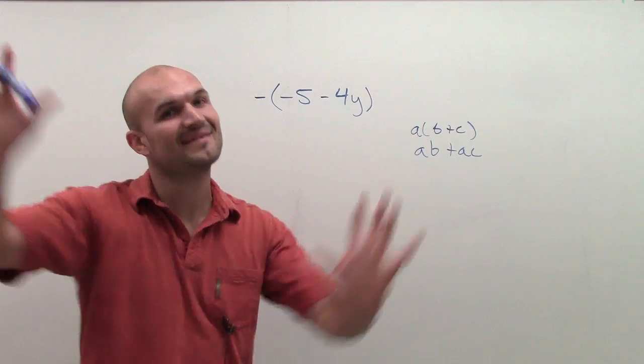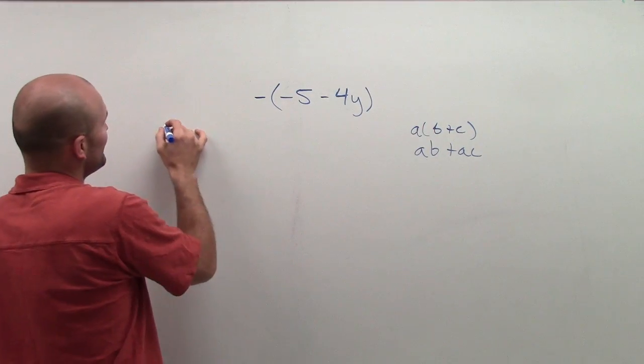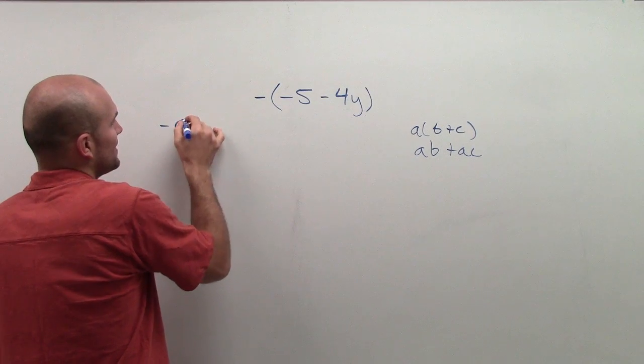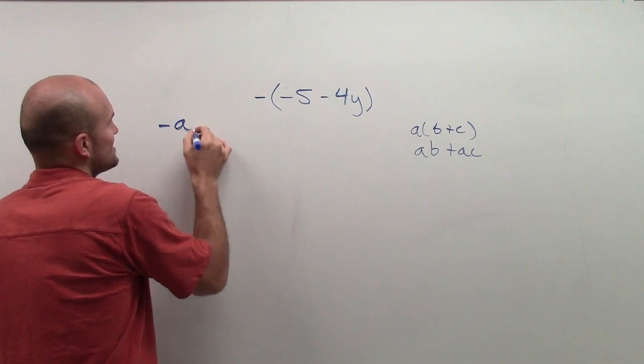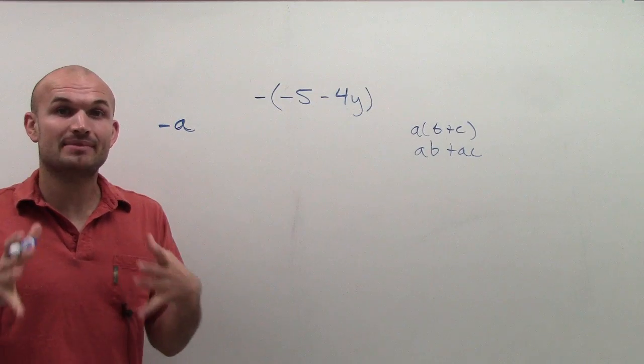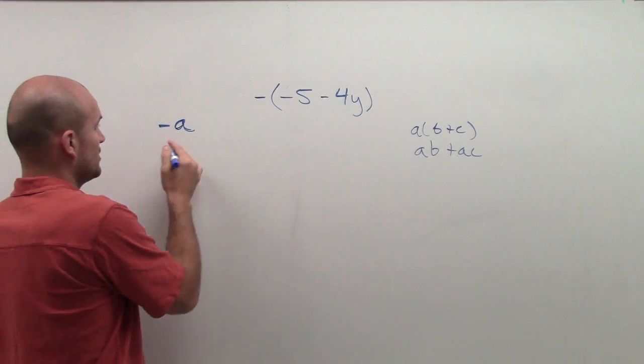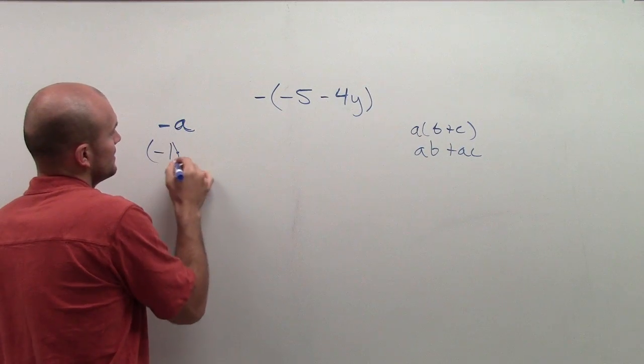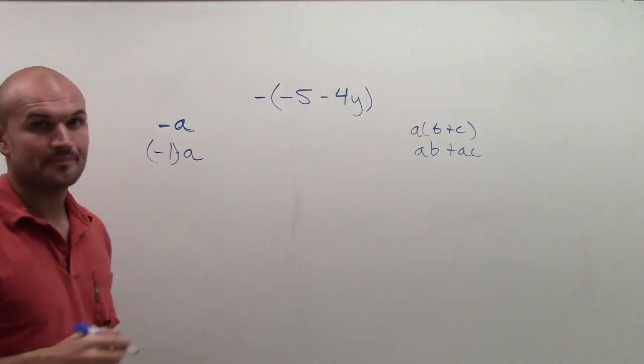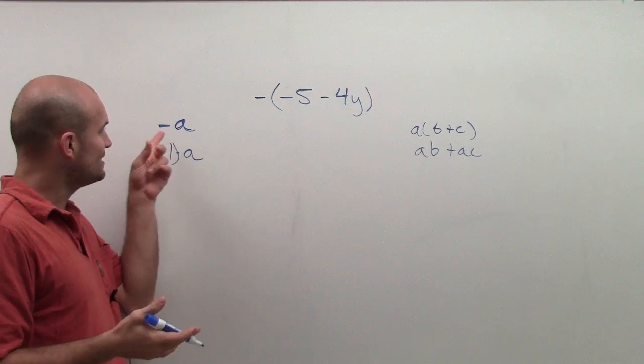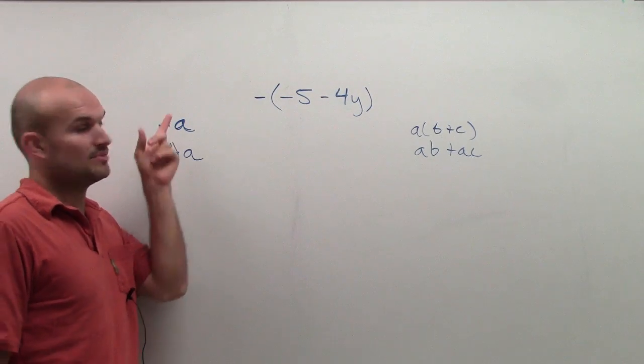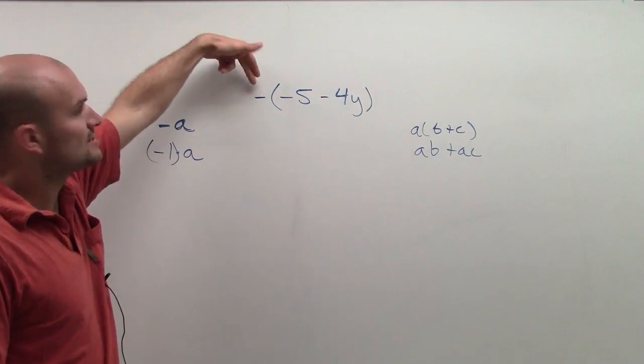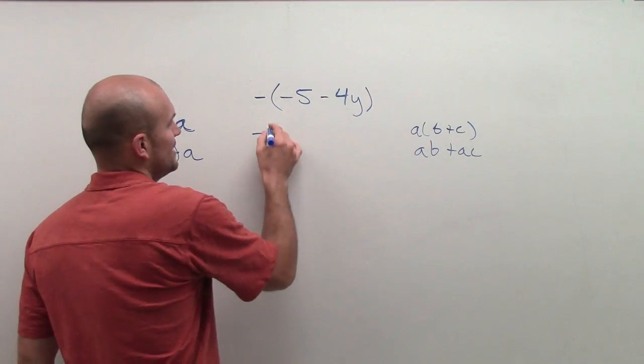Remember, we have the multiplication property of negative 1, which states when you have a negative number, that can be rewritten, or negative variable, as negative 1 times your variable or the number. So I can re-represent a negative symbol as a negative 1. So that's exactly what I'm going to want to do here.